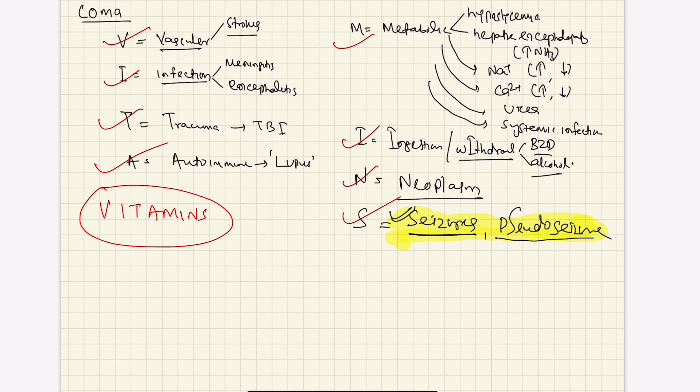How to approach coma? There is a very beautiful acronym for coma - it's called VITAMINS. V stands for vascular, like stroke, ischemic or hemorrhagic stroke. I stands for infection - meningitis, encephalitis, even systemic infection can cause encephalopathy.